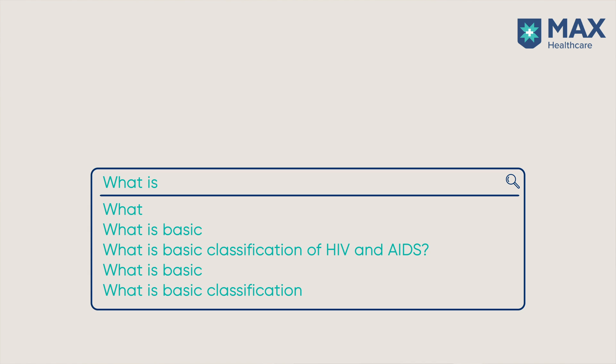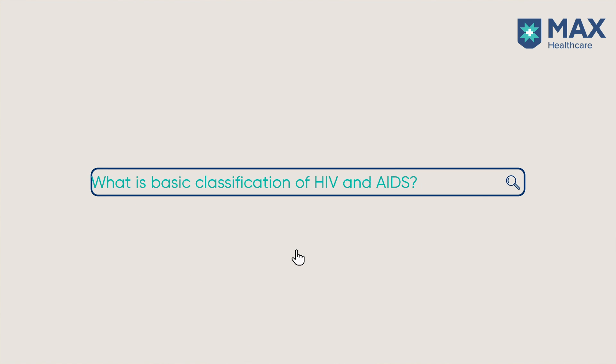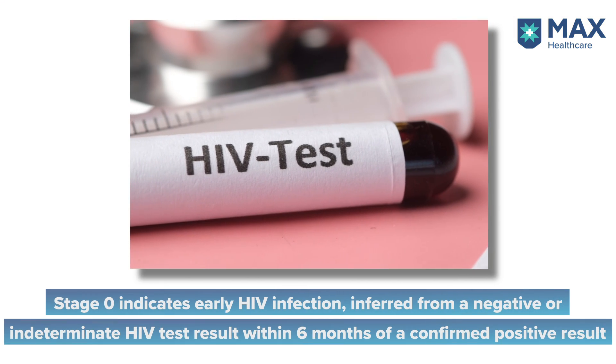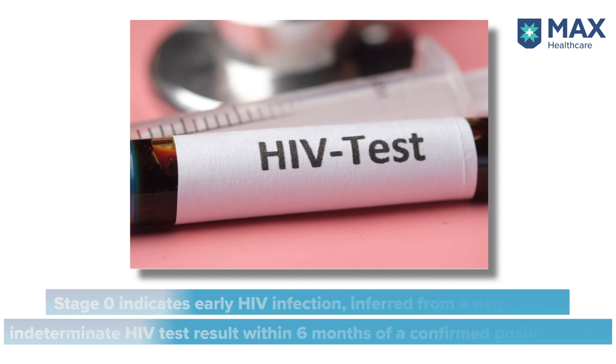The first thing is: what is the basic classification of HIV and AIDS? The Centers for Disease Control has made the classification into stages 0, 1, 2, and 3, and there is also an 'unknown' category. We will not talk about unknown because only about 2% of the population has been affected by unknown HIV. Focusing on stages 0 and 3: stage 0 means a patient came to the OPD and was incidentally found to be HIV positive, but had a negative finding within the first six months.